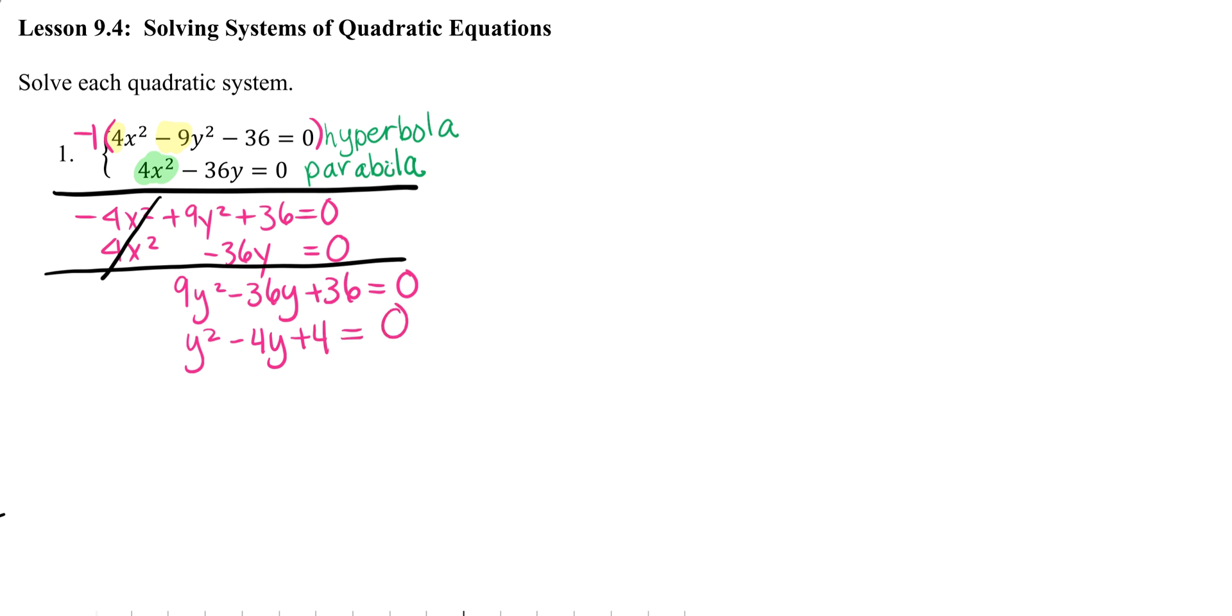And then I'm going to go ahead and solve this equation. So I could write it as y minus 2 quantity squared equals 0. So I get y equals 2.